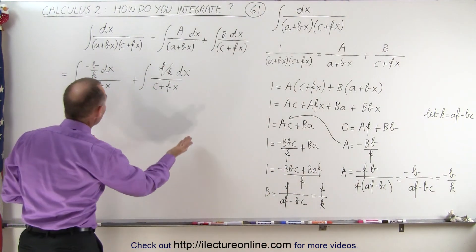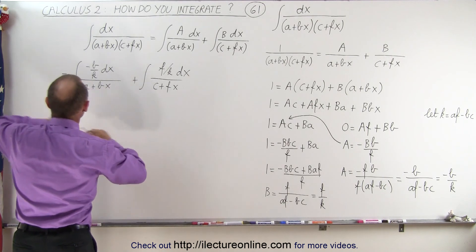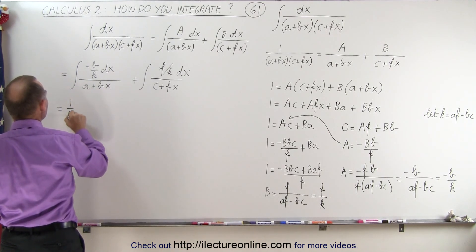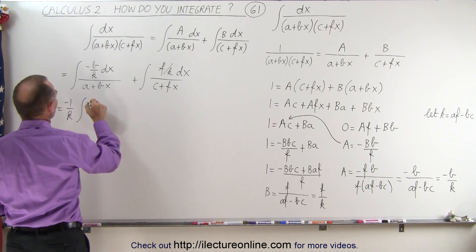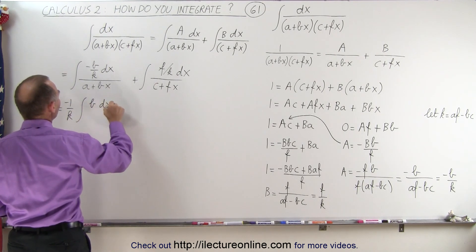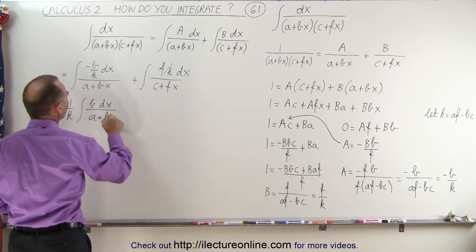Then we realize we can factor out 1 over k, so this becomes as follows. This is equal to 1 over k times the integral of, and I'll put the minus in front, so we have -b dx over (a + bx).